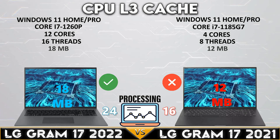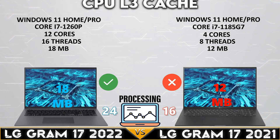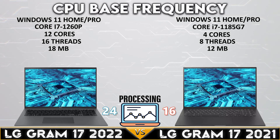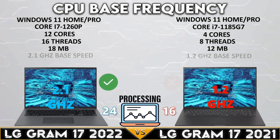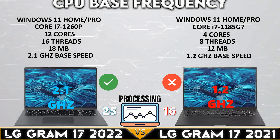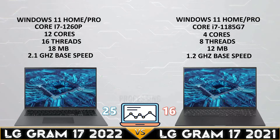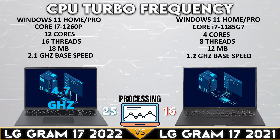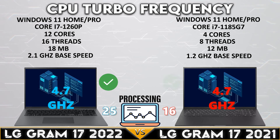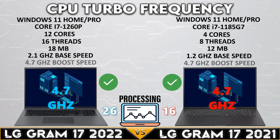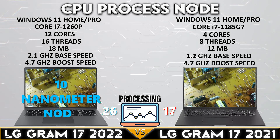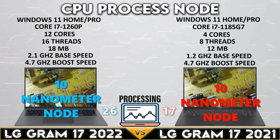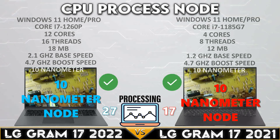The LG Gram 17 2022 has 18MB of L3 cache with a base clock of 2.1GHz. Both devices have the same CPU boost speed up to 4.7GHz, and both devices have the same CPU process node.